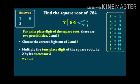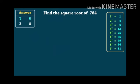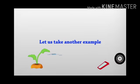6 is smaller than 7. So, we will take the bigger number as the units place. 8 is greater than 2, so the units place will be 8. Therefore, the square root of 784 is 28.